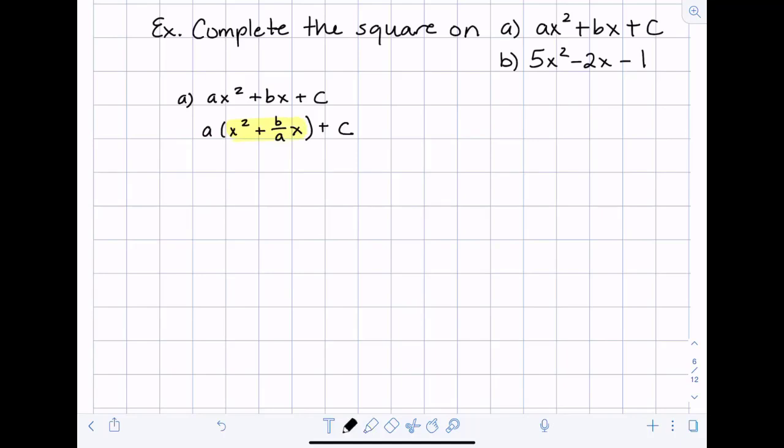So I'll copy the a the parentheses down and my plus c and then within the parentheses I know that the pattern is going to be I should have x plus or minus some number squared and then plus or minus some number. So knowing that pattern I want to think about when I square something there's going to be an x I want to square something that's going to when I actually do the foil I want to actually end up with b over a.